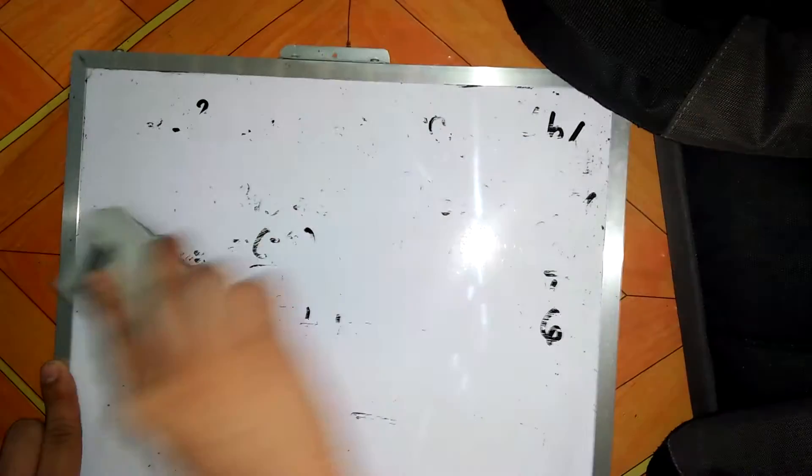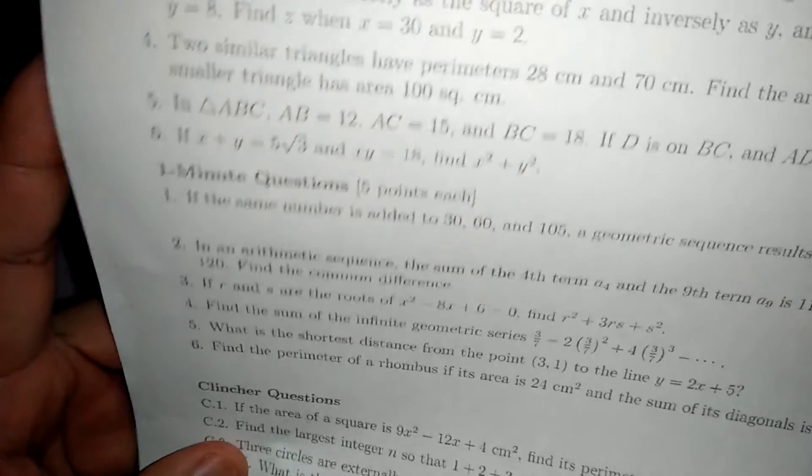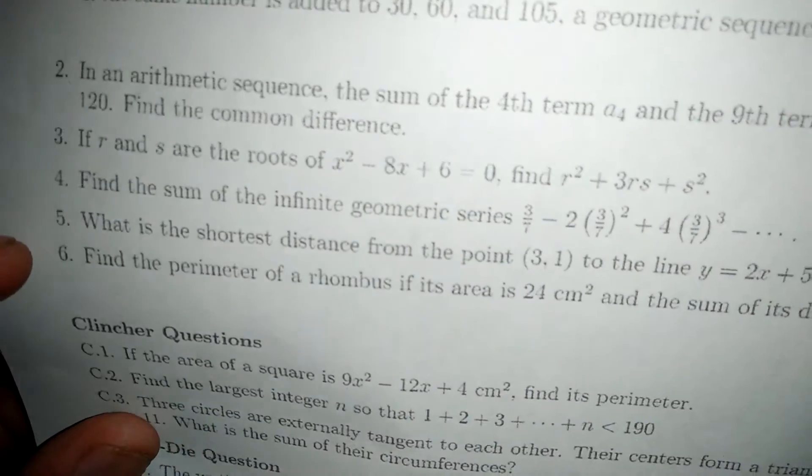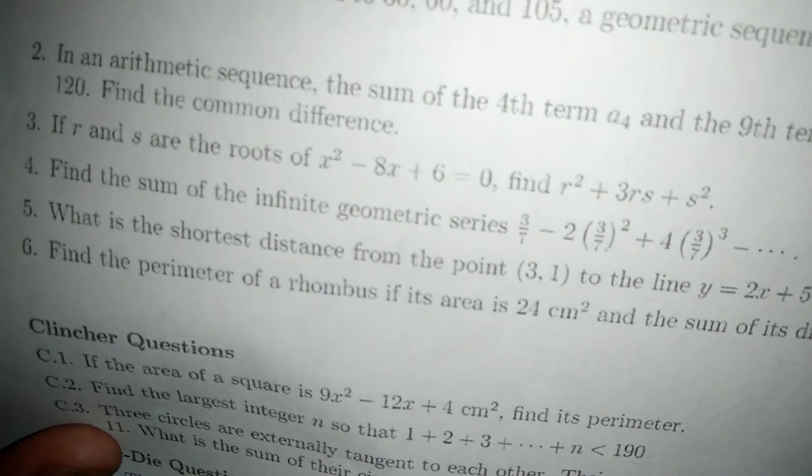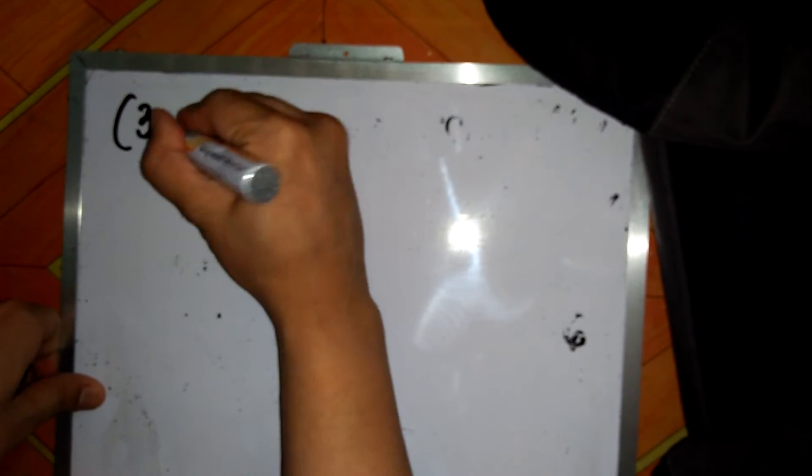Okay, we just need to erase this one first. For our next problem, we can solve problem number five. What is the shortest distance from the point 3 comma 1 to the line y equals 2x plus 5? Okay, so the given is point 3 comma 1.